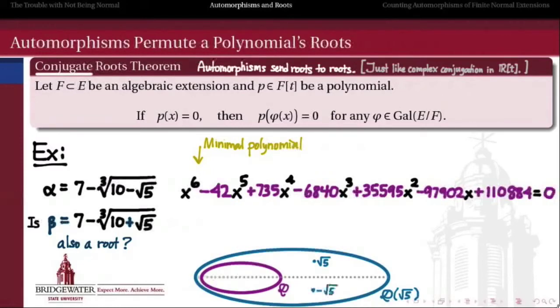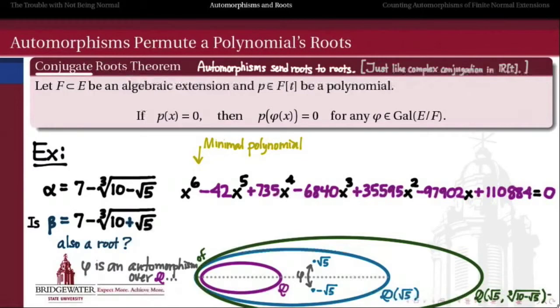So if I take the rationals, the first thing I might do is extend the rationals by the square root of 5. That's a quadratic extension, therefore it's a normal extension, and therefore it has a non-trivial automorphism that sends radical 5 to minus radical 5. That appears to be exactly the automorphism that we want to relate this alpha to this beta. So that phi is an automorphism of Q adjoined radical 5 over Q, because trading radical 5 and minus radical 5 is going to leave all the rational numbers alone. But then alpha doesn't really live in this extended field. It actually lives in a bigger extended field. Maybe radical 5 and the cube root of 10 minus radical 5.